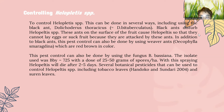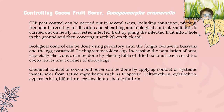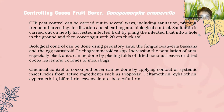Several botanical pesticides can be used to control Helopeltis, including tobacco leaves and soursop leaves. The second topic is controlling the cocoa pod borer. CPB pest control can be carried out in several ways, including sanitation, pruning, frequent harvesting, fertilization and shading, and biological control. Sanitation is carried out on newly harvested infected fruit by placing the infected fruit into a hole in the ground and then covering it with 20 cm thick soil. Biological control can be done using predator ants, the fungus Beauveria bassiana, and the egg parasitoid Trichogramma sp., by increasing the population of ants.